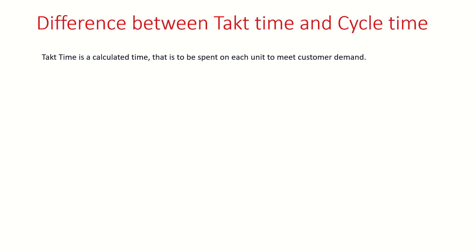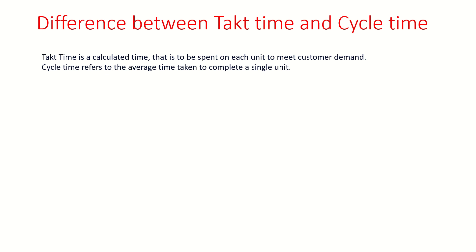Let us first understand what is the definition of takt time. Takt time is a calculated time that is to be spent on each unit to meet customer demand. If the production of one unit is exceeding the takt time, we are not going to meet the customer demand at the end of the day. Cycle time refers to the average time taken to complete one single unit.